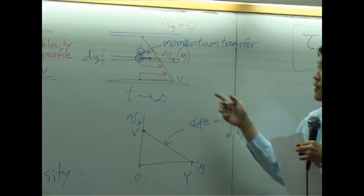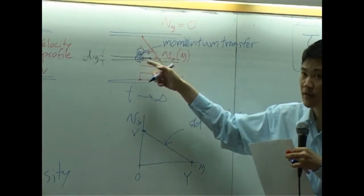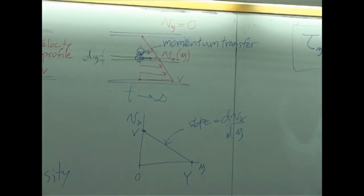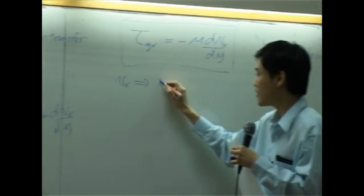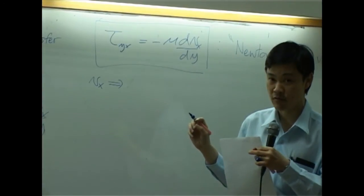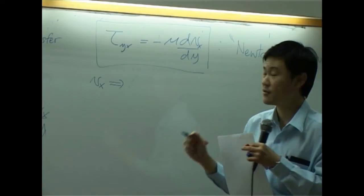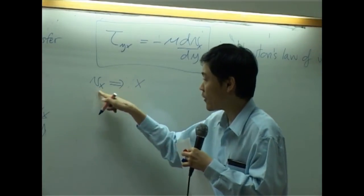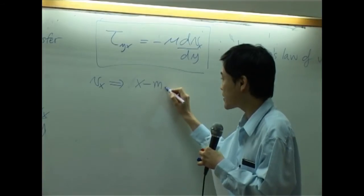Now, when you look at this part of the fluid, it has velocity in the x-direction. So if velocity is in the x-direction, that should result in momentum in the x-direction as well. Momentum is supposed to have directions. So velocity in the x-direction gives you x-momentum.